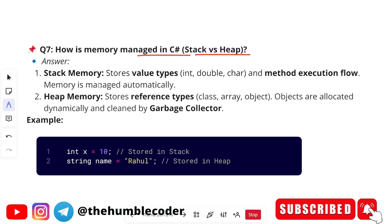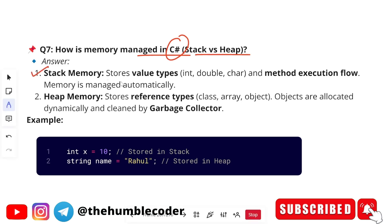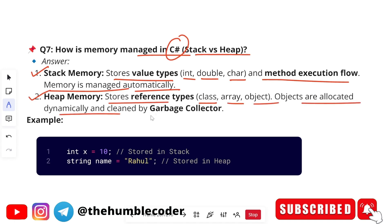Next question: how is memory managed in C# — stack versus heap? This is a general question framed around C#. Stack memory stores value types like int, double, and char, and method execution flow — memory is managed automatically. Heap memory stores reference types like classes, arrays, and objects — objects are allocated dynamically and cleaned by the garbage collector. These are basic sample answers; for deeper understanding, search for more detail online and prepare your own answers.